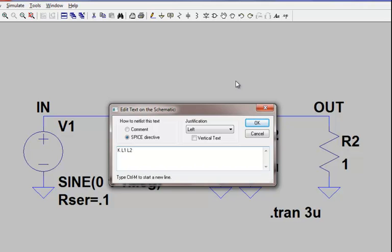The last entry in the K statement is the mutual coupling coefficient. This is on a scale from 0 to 1, where 1 means perfect coupling between the inductors, in other words, no leakage inductance.